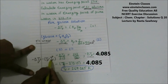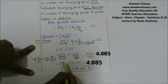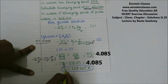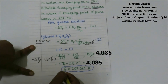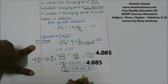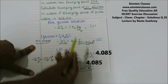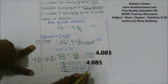Minus delta Tf can be written as Tf⁰ minus Tf, where Tf⁰ is the freezing point of the solvent (273.15 K). So 273.15 minus Tf = 4.085, giving the freezing point of the glucose solution as 269.065 Kelvin. As expected, the freezing point of the solution (269.065 K) is less than that of the pure solvent (273.15 K).